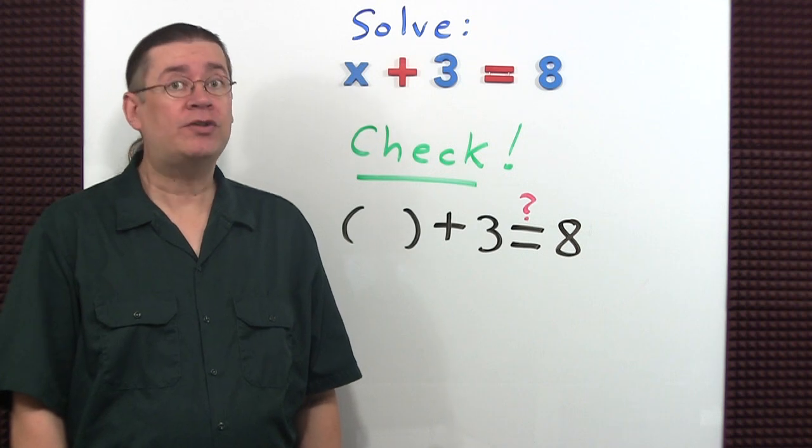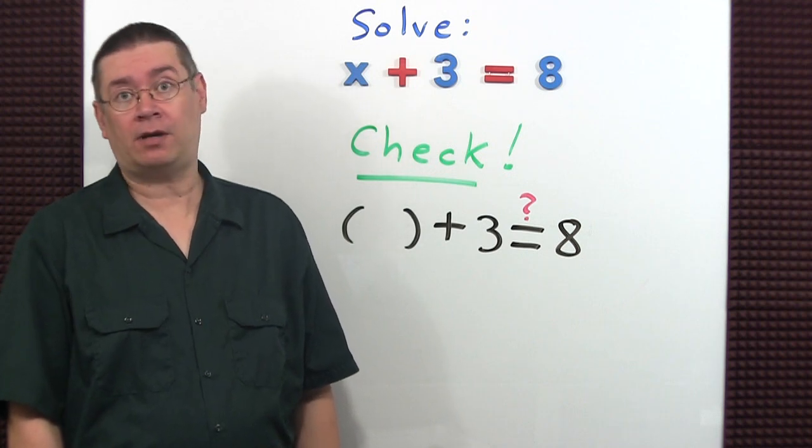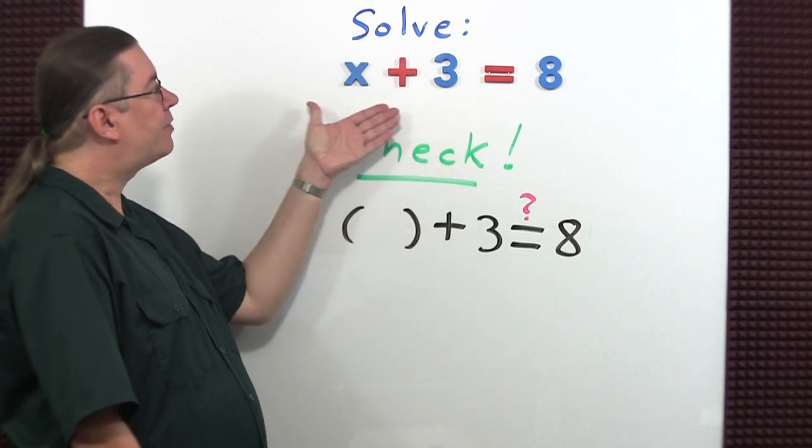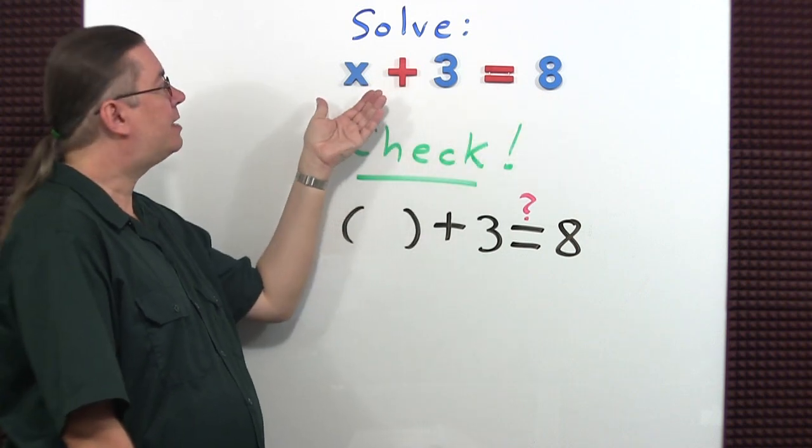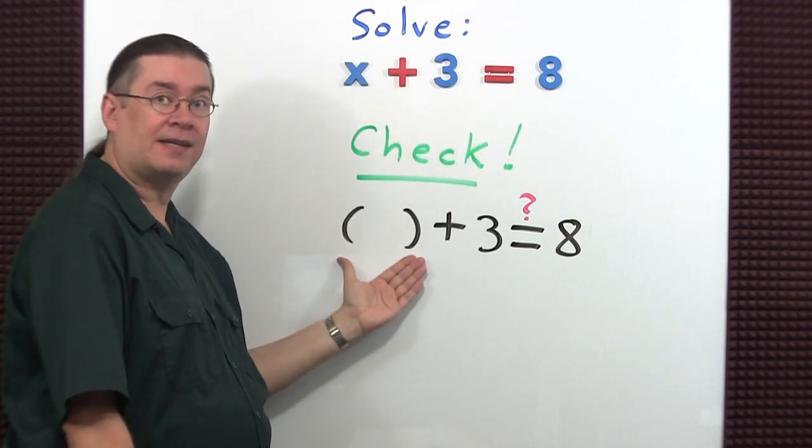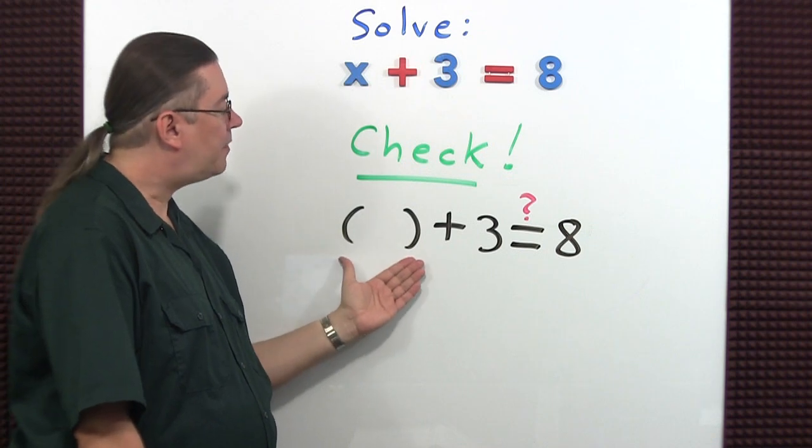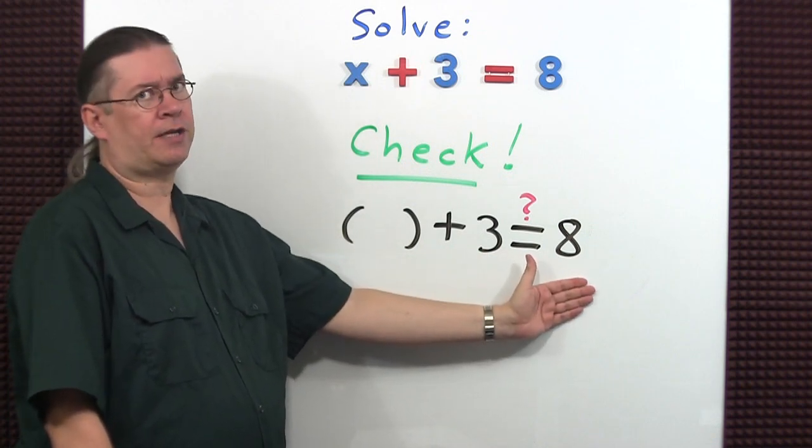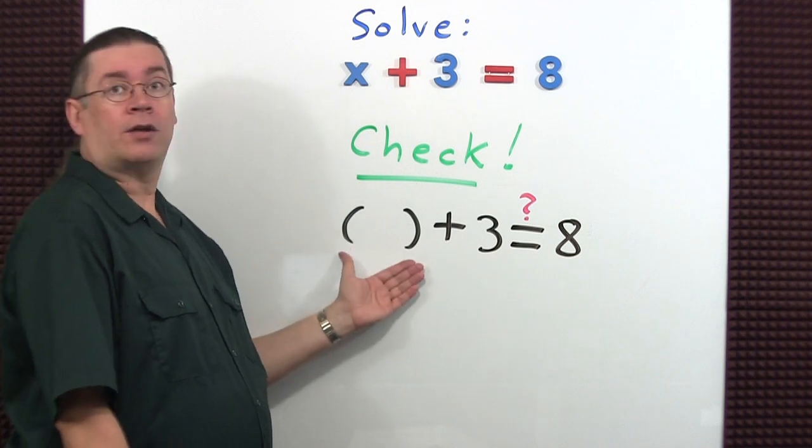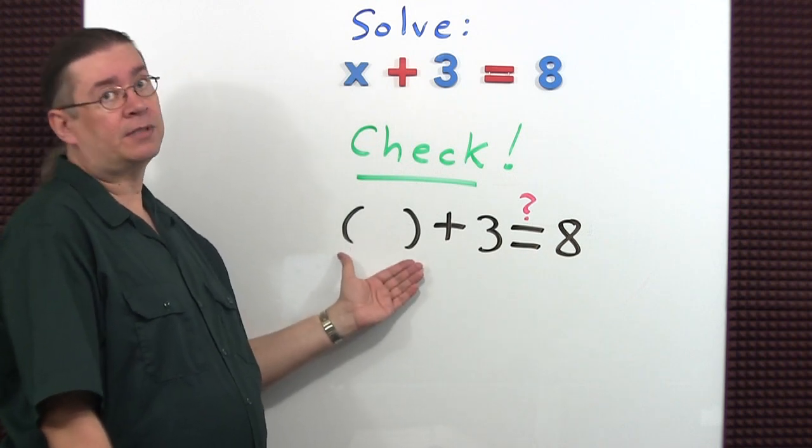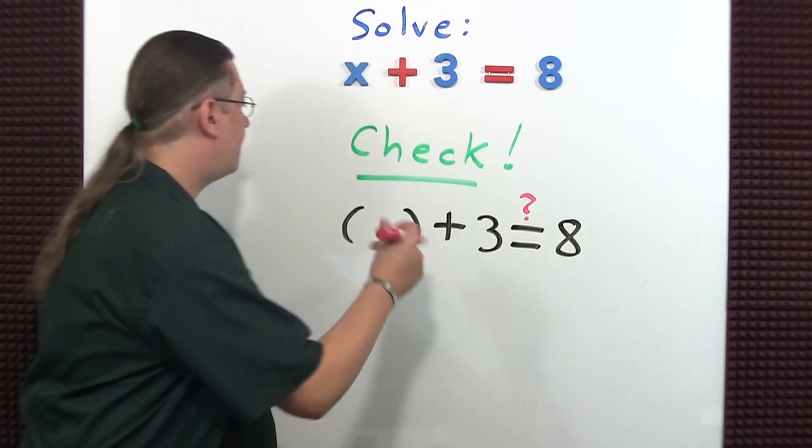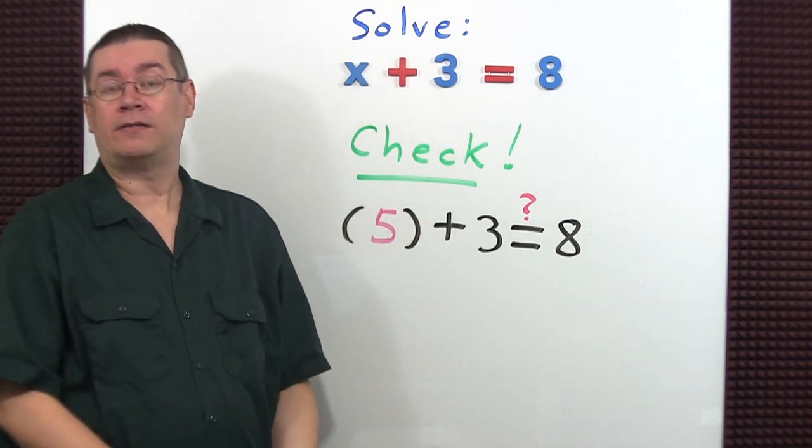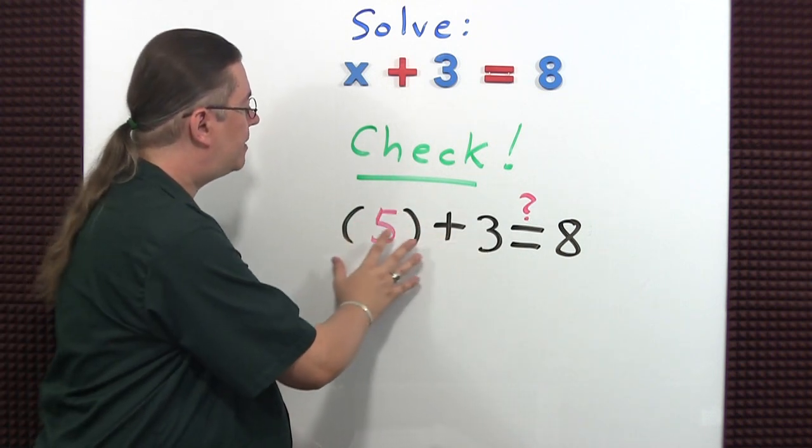When you solve an equation, it's usually a very good idea to check to see if you got the right answer. The first step to checking the problem is to rewrite the equation, but in place of the variable put a set of parentheses. So it's something plus 3, is it equal to 8? We don't know, we're checking. We found out earlier that x was equal to 5. Now let's see what happens when we combine this: 5 plus 3 is equal to 8, which is equal to 8, so it checks.